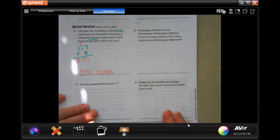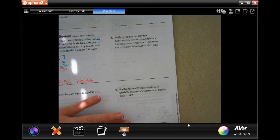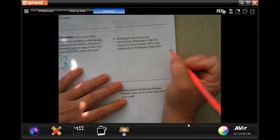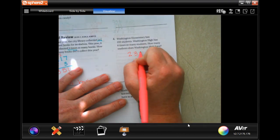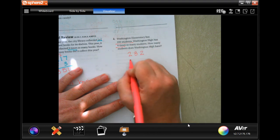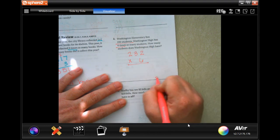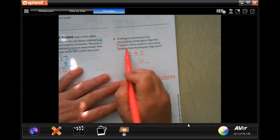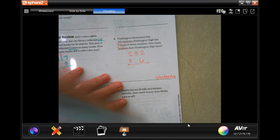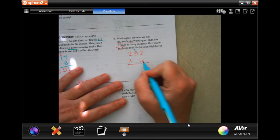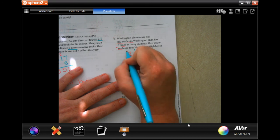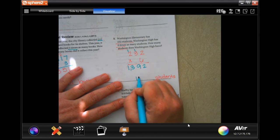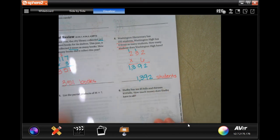Washington Elementary has 232 students. Washington High has six times as many students. How many students does Washington High have? So 232, and it's telling you times 6. And whatever our answer is, our label will be students. 6 times 2 is 12. Carry your 1. 6 times 3 is 18, plus 1 is 19. Carry your 1 again. 6 times 2 is 12, plus 1, 13. So 1,392 students.